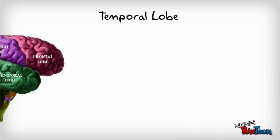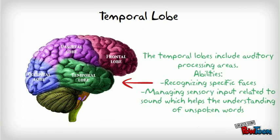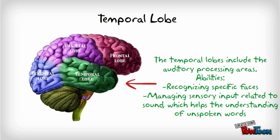The temporal lobe includes auditory processing areas. Some of the abilities these lobes manage in association areas are recognizing specific faces and managing sensory input related to sound, which helps the understanding of unspoken words.